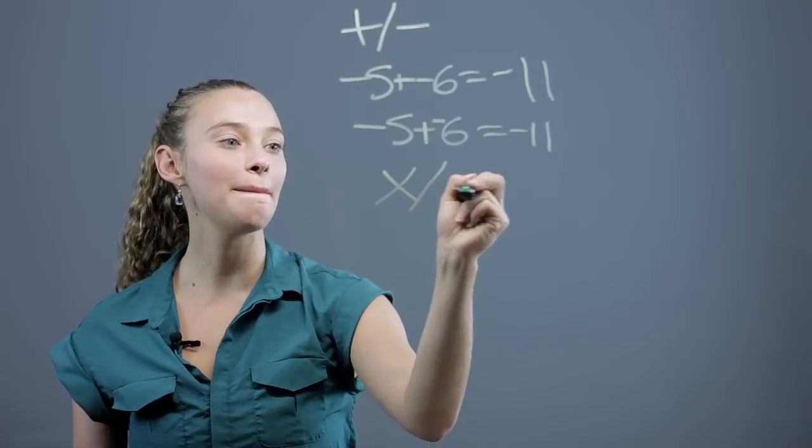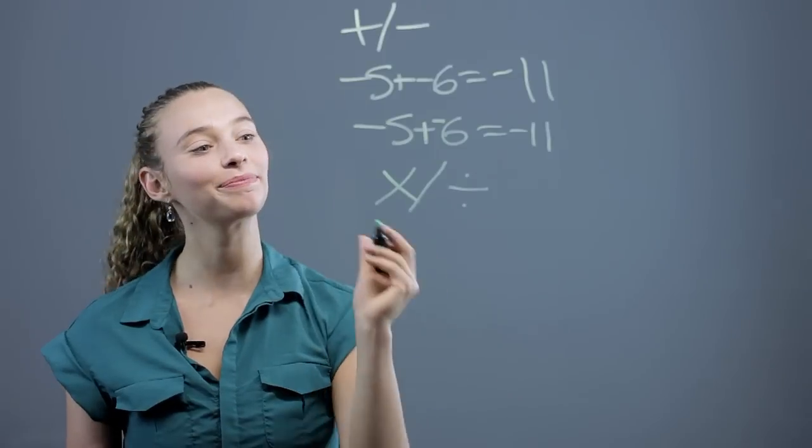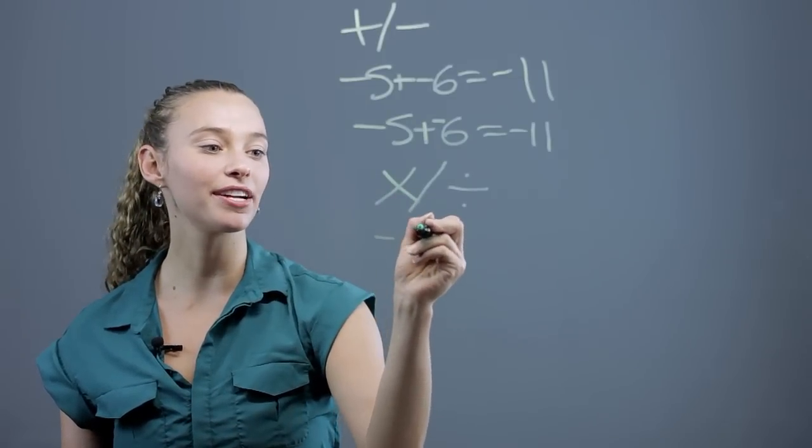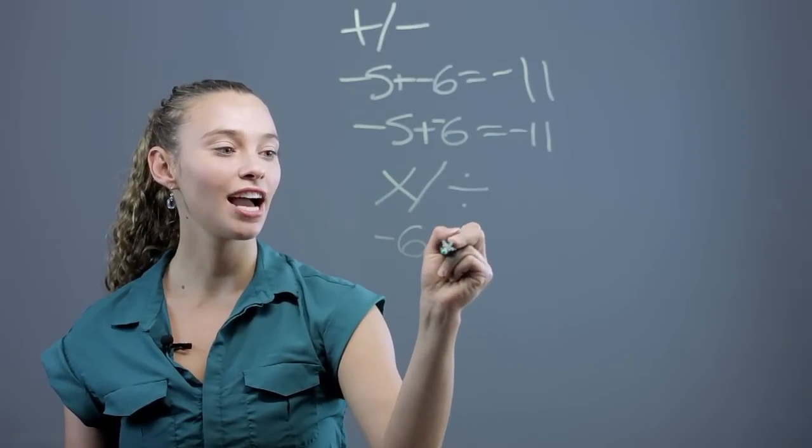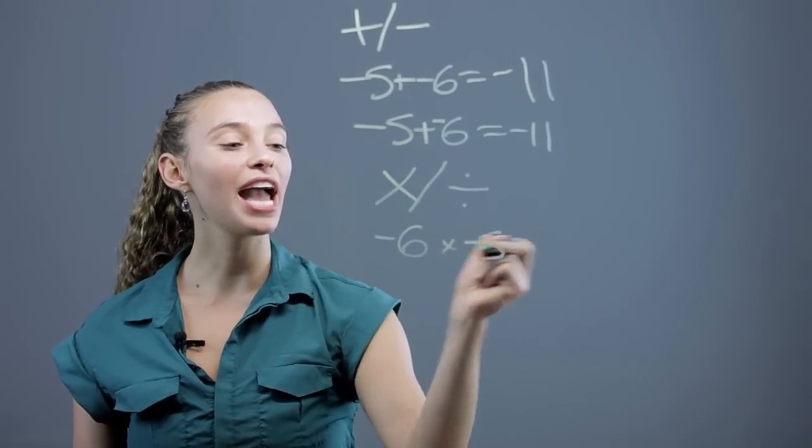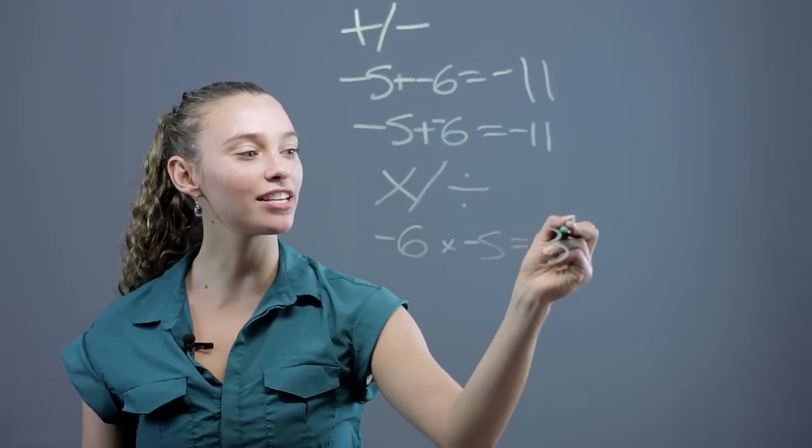Now let's look at multiplication and division. When we multiply two negative numbers, negative 6 times negative 5, we actually end up getting a positive number.